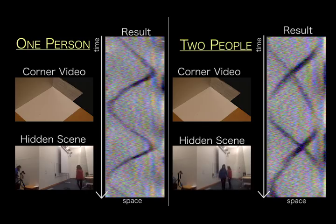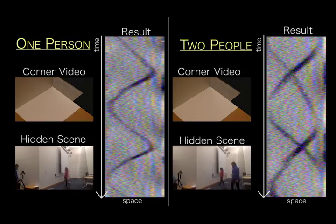In our other experiments, we use the light naturally present in the scene. The recovered 1D videos not only tell us the position of the people behind the corner, but also tell us the speed and the manner of their movement, as well as the number of people in the hidden scene.